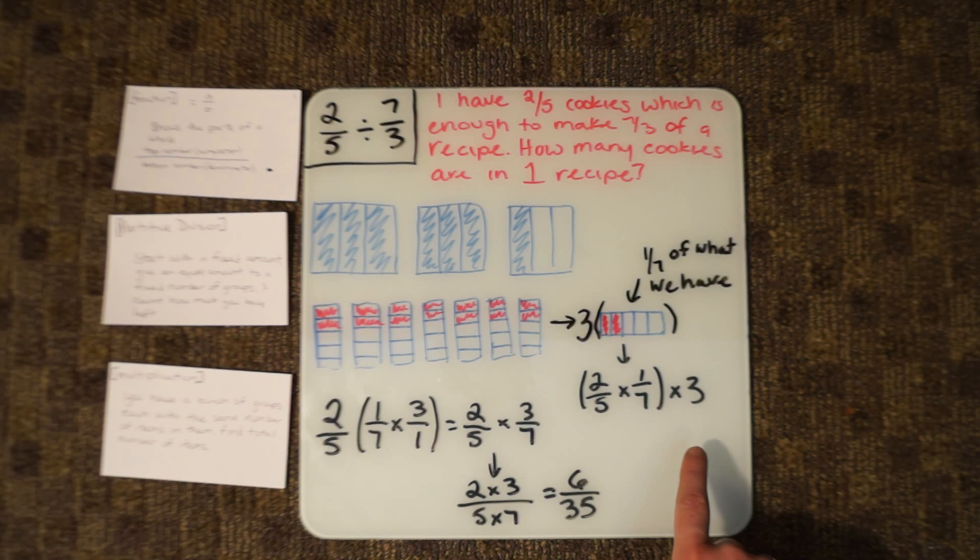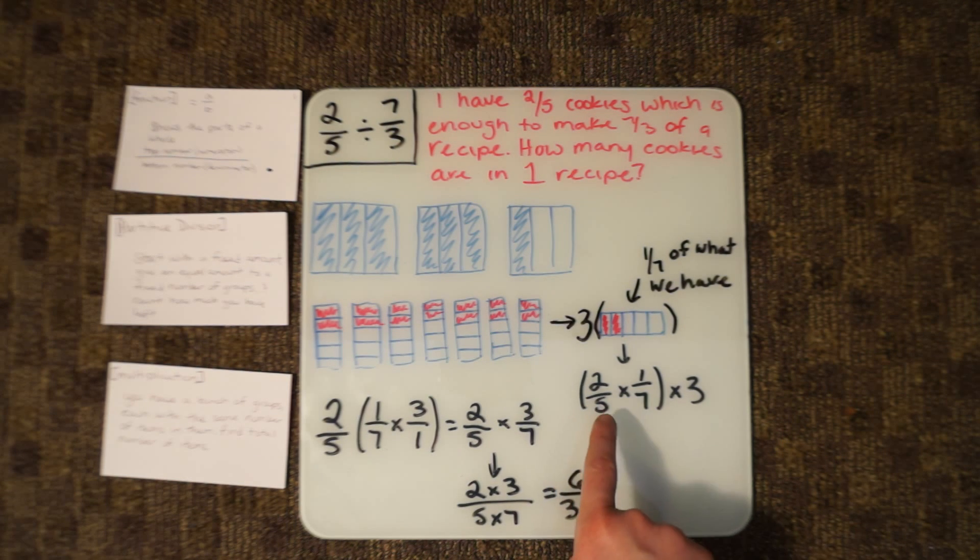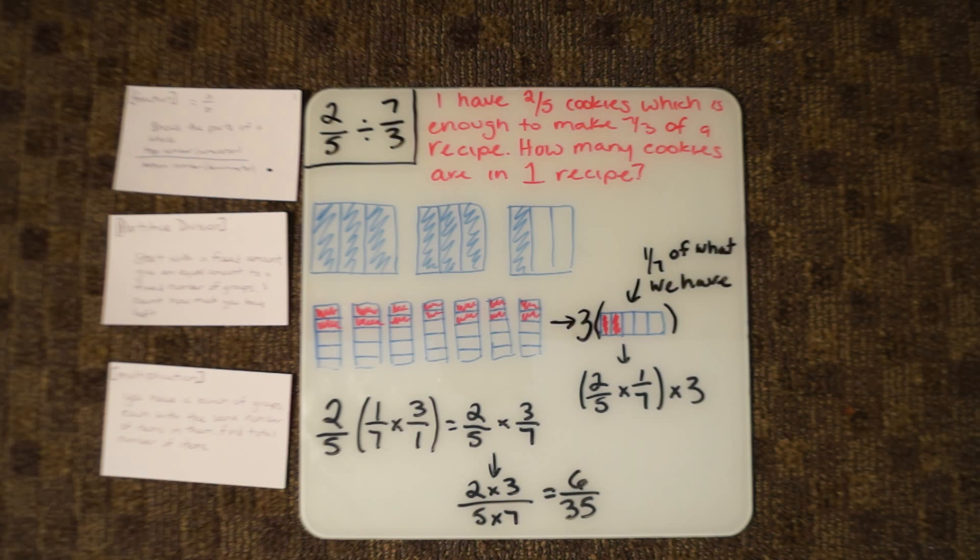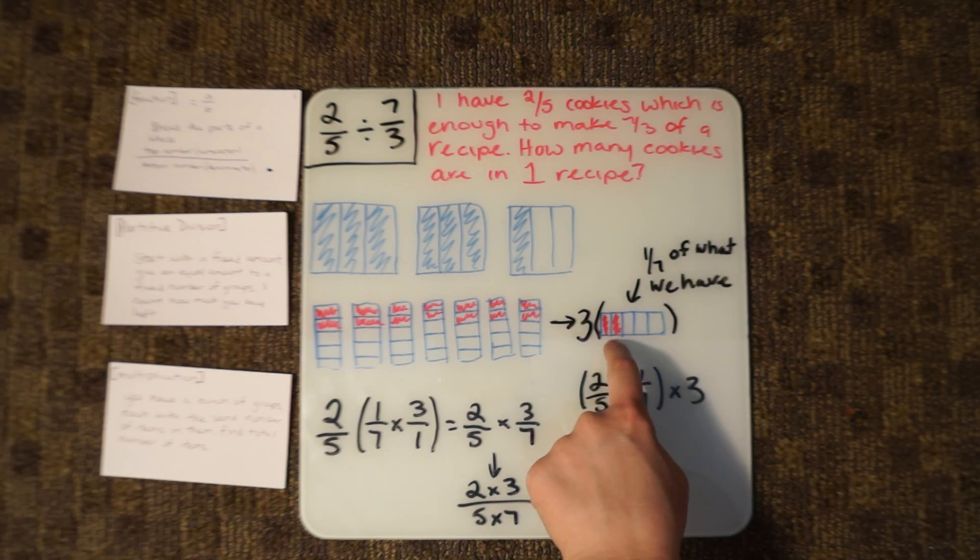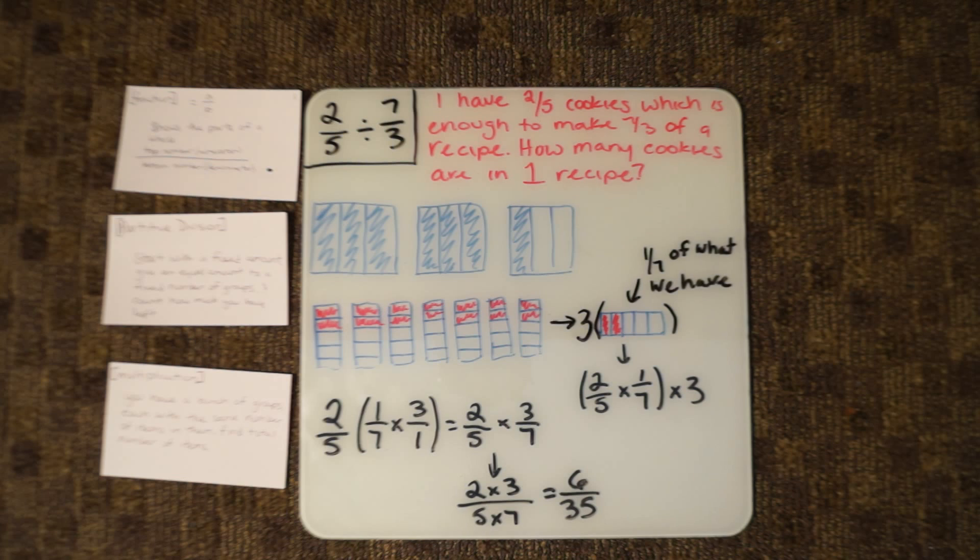You have 2/5 of a cookie, and you separated this by showing you have 2 parts of the 5 equal parts.